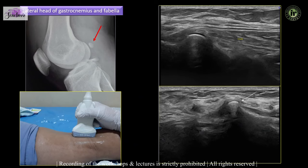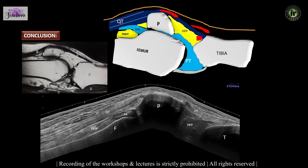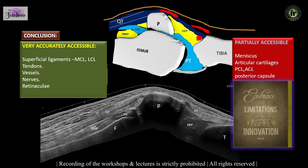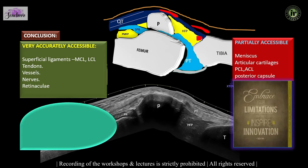Lastly, we should look at the proximal tibiofibular joint and the insertion of the lateral head of gastrocnemius into the lateral condyle of the femur, which may contain an ossified bone called the fabella that acts as a stabilizer to the soft tissue structures on the posterolateral aspect of the knee. So that concludes our knee examination. Every diagnostic tool has advantages and limitations, and we should know our limitations because limitation inspires innovation. In MSK ultrasound, good anatomical knowledge, a proper protocol, and practice give us the key to success. Thank you.